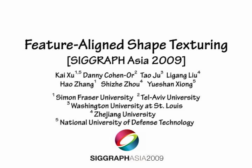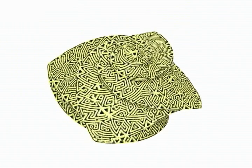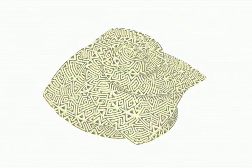We present Feature Align Shape Texturing, a novel technique for synthesizing natural looking and shape revealing textures on surfaces by aligning feature curves in the texture with those on the surface.